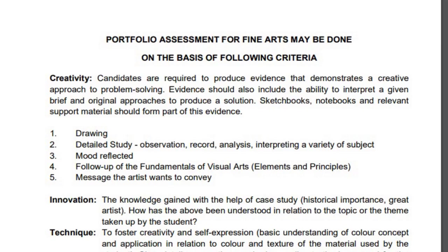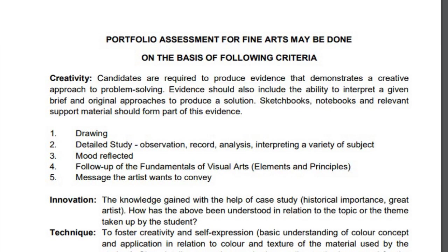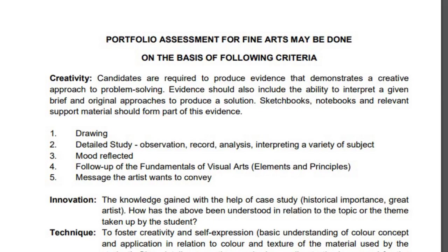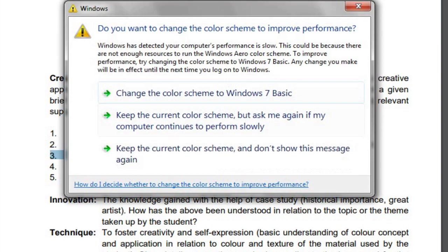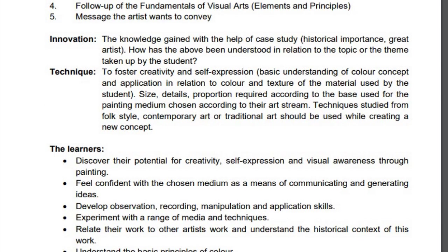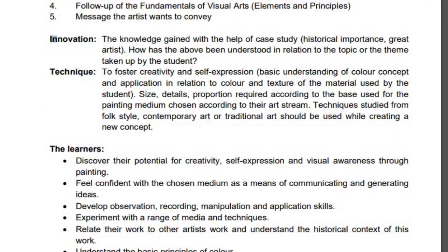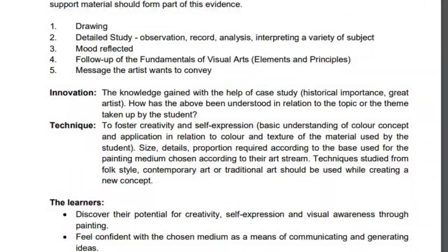The second is detailed study: observation, record, analysis, interpreting, and variety of subject. In this study we will discuss the theory part in the practical session. The third is mood reflecting. The fourth is follow-up on the fundamentals of visual art — elements and principles of arts. The fifth is the message the artist wants to convey — the main purpose of art, like whatever message an artist wants to convey in society.